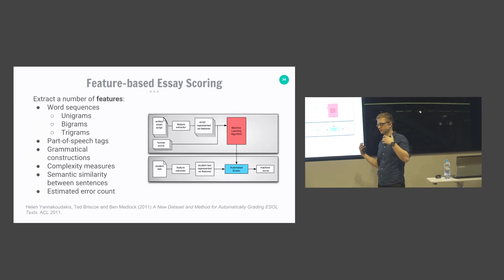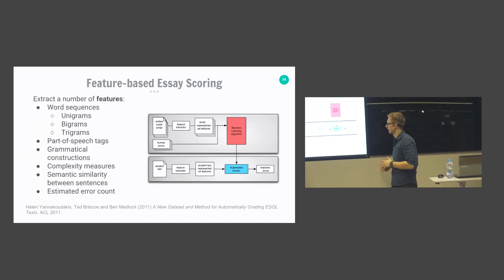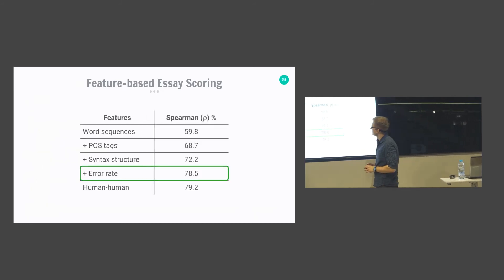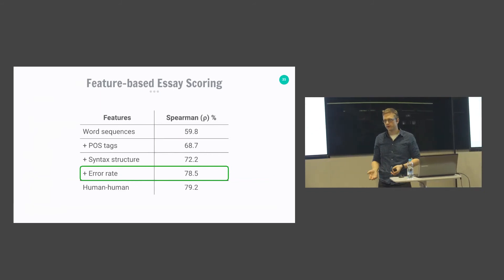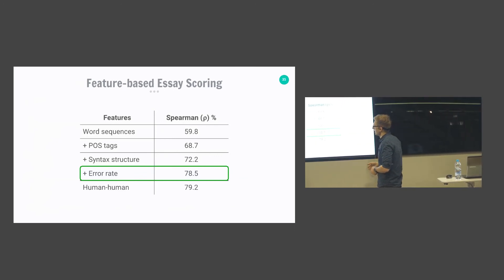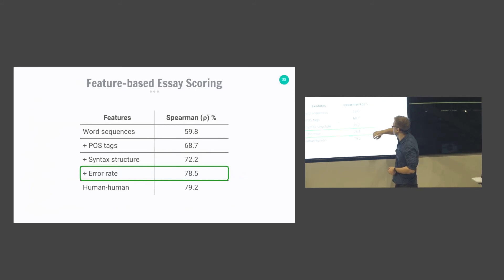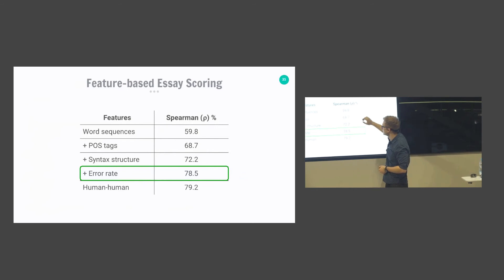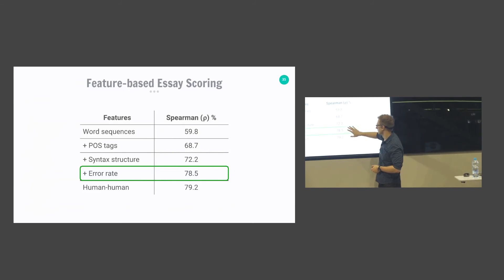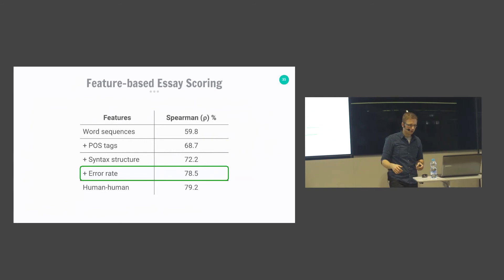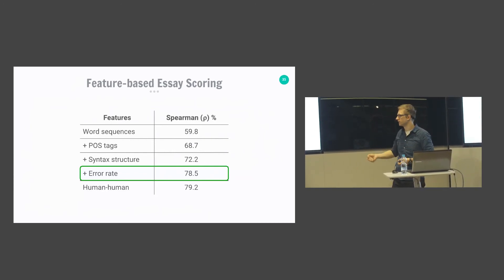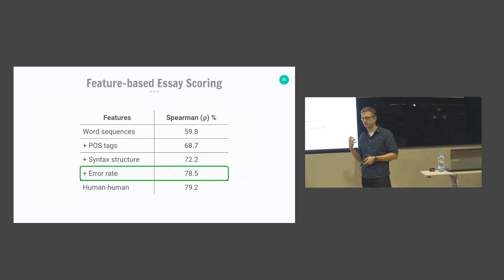Results measured by Spearman's correlation show that using only word sequences gives about 60% correlation; adding part-of-speech tags brings this to 68%; including syntactic structure reaches 72%; and adding estimated error rate gets us to 78%. Notably, the correlation between two human annotators is around 79%, so the automated system is already getting very close to human quality in assessing essays.